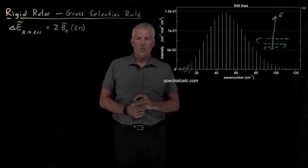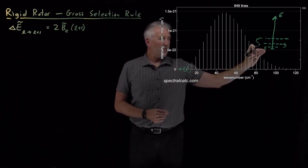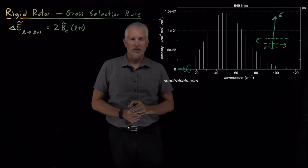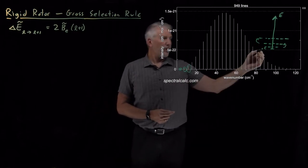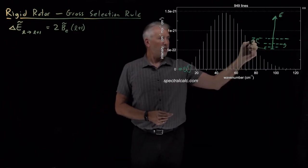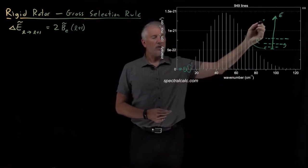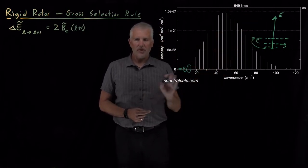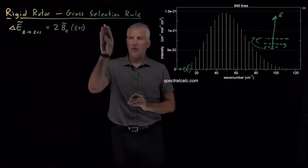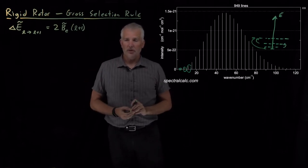But this raises a question: why are we limited to only jumping up one level at a time on this energy ladder? Why can't we jump directly from the L equals 0 state all the way up to the L equals 3 state, or to the L equals 10 state, or any state that we wish? And it turns out there's a good reason for that, and we call those reasons selection rules.